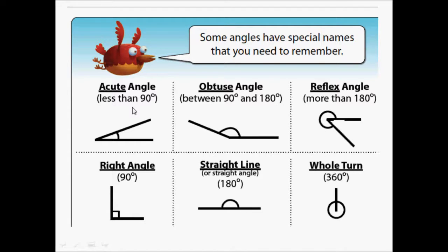Remember we have acute, obtuse, reflex, right, straight, and whole turn angles. Remember that we measure angles with the use of a protractor, which comes in degrees to help us with the measuring of angles.